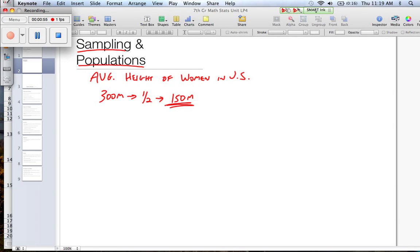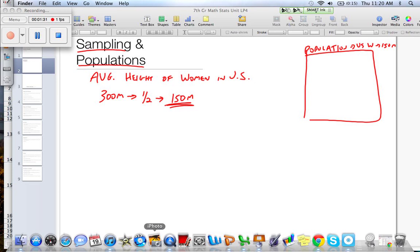To measure each one's height is impossible. The population is going to be constantly changing between people being born, moving, people passing away. The population will change constantly. Now, here is the whole population or entire data set of U.S. women. There's 150 million of them. If I want to find out the average height without trying to measure each woman's height, I would simply have to take what we call a sample.